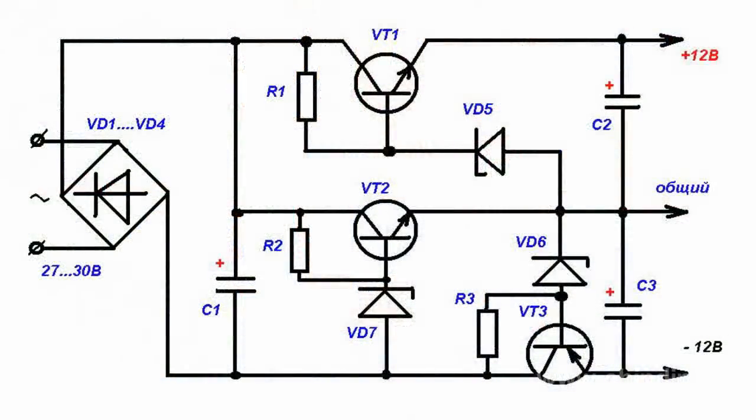Here is one example of a bipolar constant voltage regulator. The circuit consists of three simple voltage regulators. Alternating current voltage is applied on the diode bridge, the plus of which comes to the collector of transistor BT2. From its emitter, relative to minus, the constant voltage of plus 12 volts is removed. Consequently, the voltage difference between the collector and emitter of transistor BT2 is 15 volts.